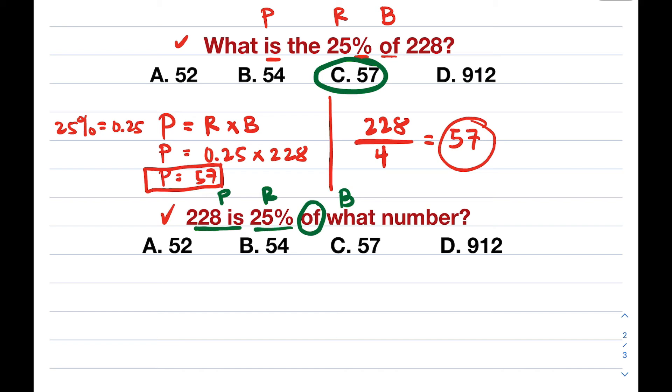We know that the formula for the base, if the base is missing, is base is equal to percentage over R. So when you solve this, what you'll do is substitute the percentage and your rate. It will become B is equal to 228 divided by 25%, convert it to decimal. You have your 0.25. What happens, look at the given: 228 divided by 0.25. This is quite tedious, especially when you're taking an exam, because calculators aren't allowed in some examinations. So that will be tricky. So I will show you a different solution.